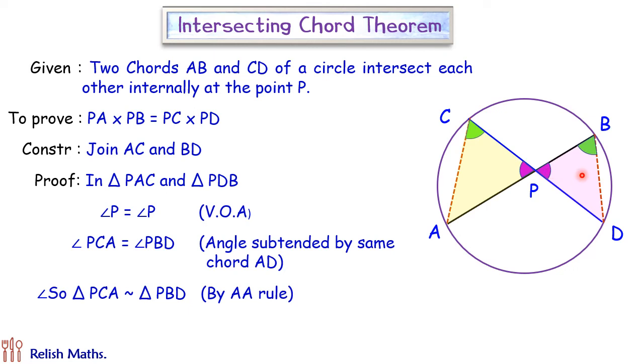If the triangles are similar to each other, then the ratio of corresponding sides, that is here PA to PC equals PD to PB. If we cross multiply them, we will get our required result.